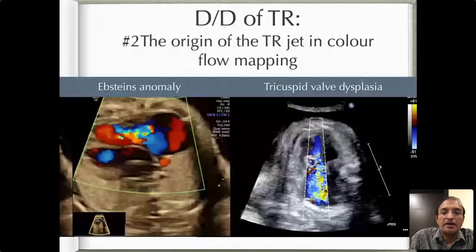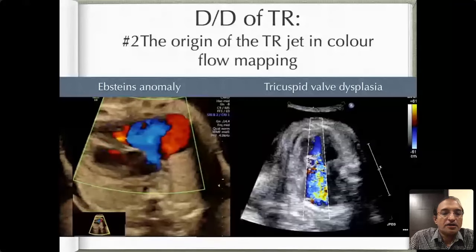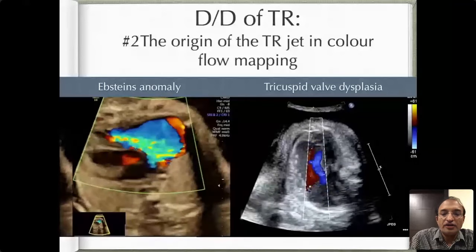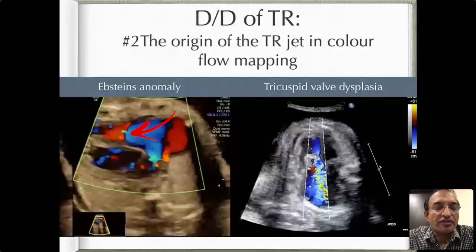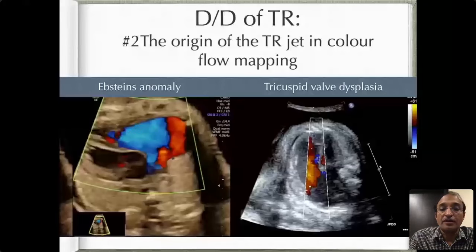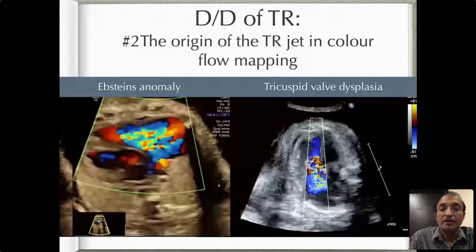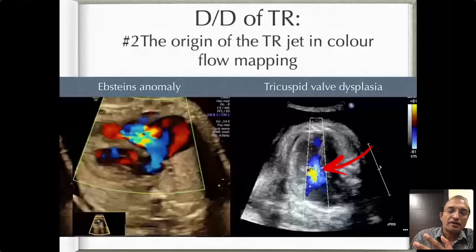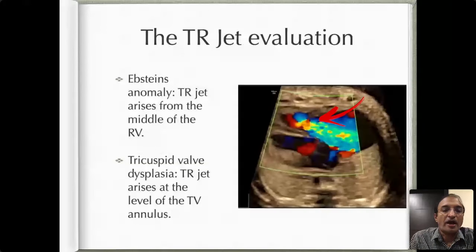The second is a simple visual clue. When you look at the origin of the TR jet in color, you see that in Ebstein's anomaly — even though we call it tricuspid regurgitation — the TR seems to be originating somewhere in the middle to apical portion of the RV, because the tricuspid valve is displaced downwards. However, in tricuspid valve dysplasia, the TR will begin at the level of the normal tricuspid valve where it should be. You can see from the still picture that in Ebstein's the TR jet arises from somewhere in the middle of the RV cavity.